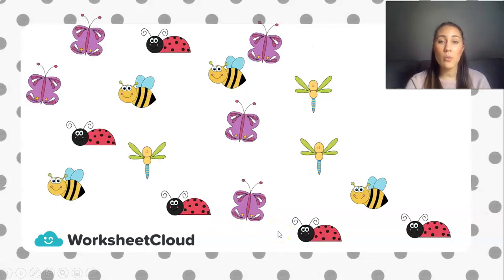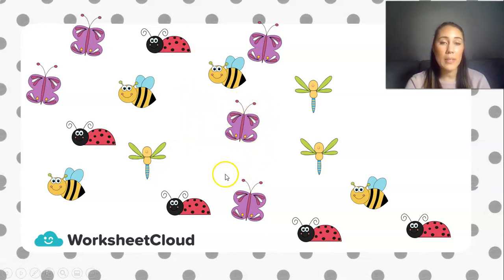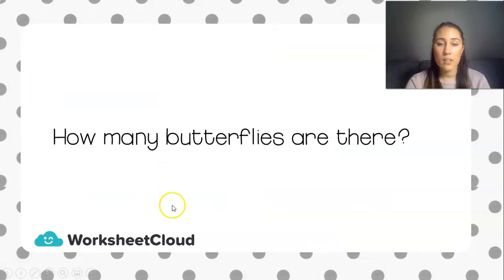If you have a look at all these bugs, there are some ladybugs, there are some butterflies, there are some dragonflies, and there are some bees. But all of these bugs are quite mixed up — they are chaotic, they're all over the place. Now let's see if we can answer some questions about these pictures. The question is: how many butterflies are there?